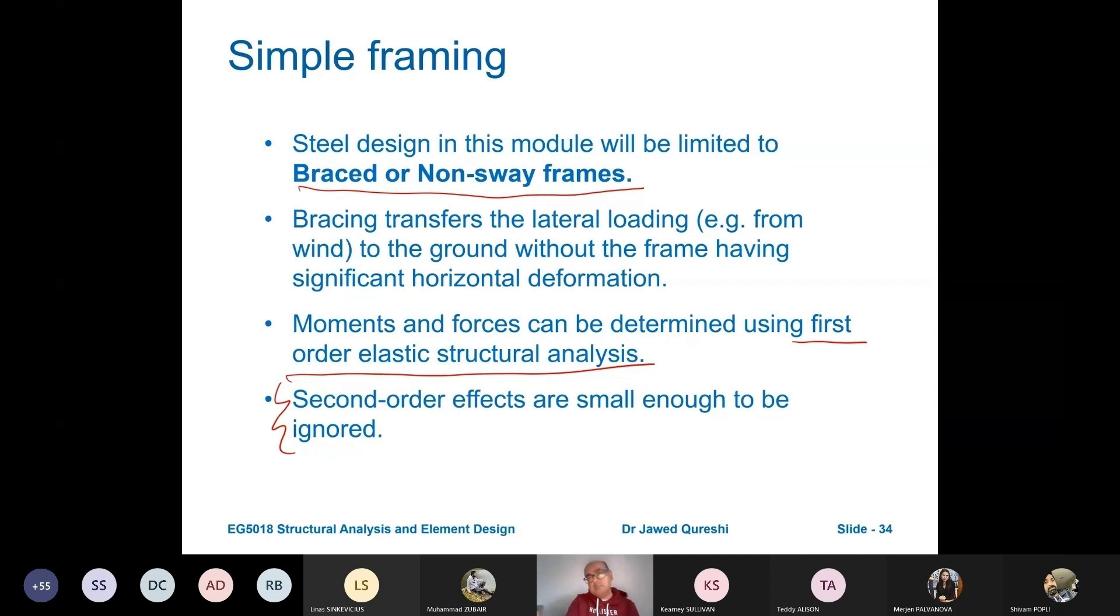So what are second order effects? Second order effects are p-delta effects. If you have a long column and you apply loading on that, it is going to deflect like this. Due to this increased deflection, it will have this kind of eccentricity over here. Because of that, it will have second order deflections.